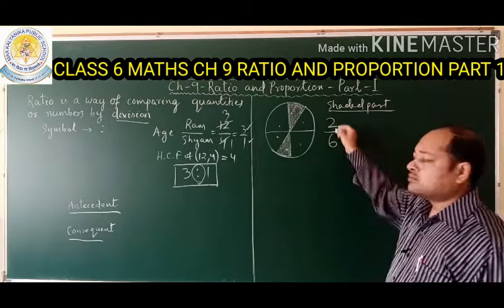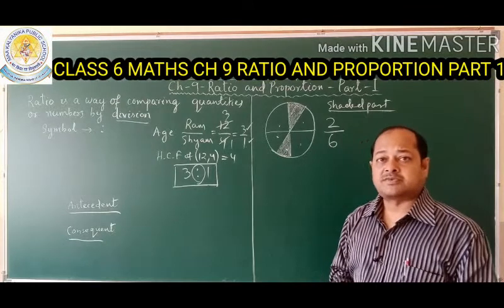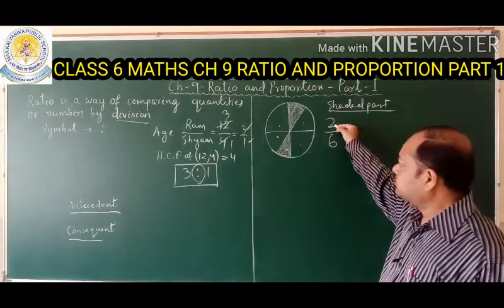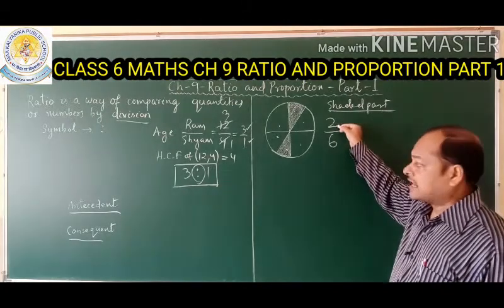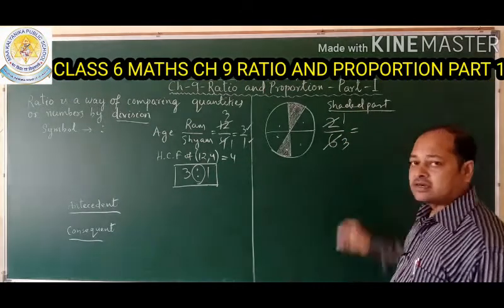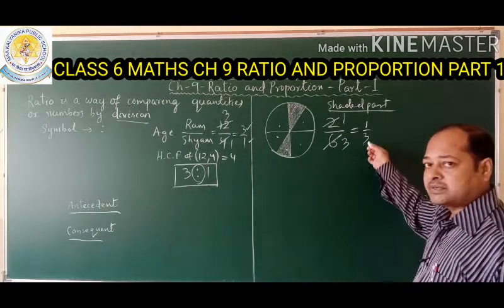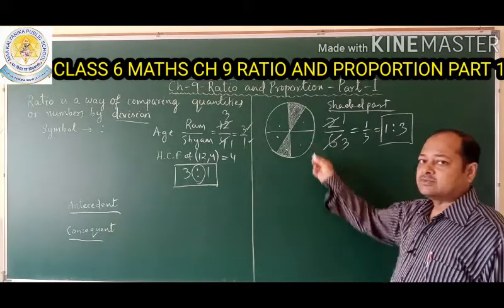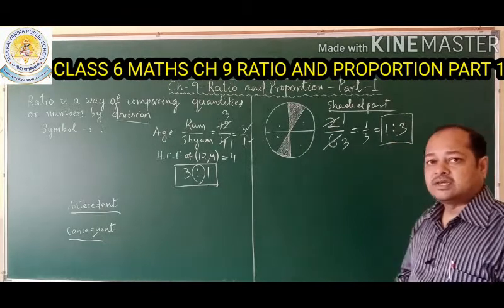Now 2 by 6 is not in the lowest or simplest form. To convert it to simplest form, we take the HCF. The HCF of 2 and 6 is 2. Dividing both antecedent and consequent by 2 gives 1 upon 3. In ratio form, 1 upon 3 is written as 1 is to 3. So the ratio of the shaded part is 1 is to 3, where 1 is the antecedent and 3 is the consequent.